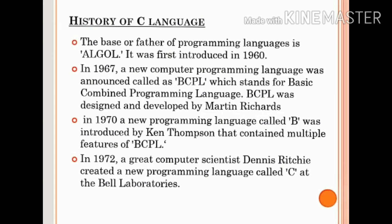In 1970, a new programming language called B was introduced by Ken Thompson that contained multiple features of BCPL. So the timeline is: Algol in 1960, BCPL in 1967, and then the language B in 1970.